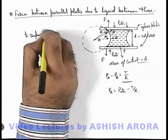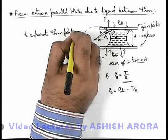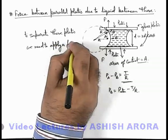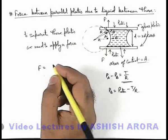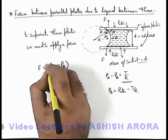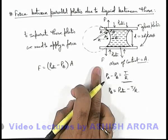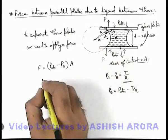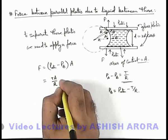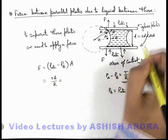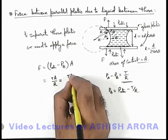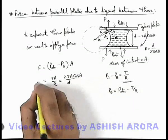And we can say to separate these plates we need to apply a force F which should be equal to, in this situation we must write P atmospheric minus pressure at point B multiplied by the surface area where the liquid is in contact or the zone in which the pressure is less. So in this situation P atmospheric minus pressure B can be written as T by r, so it can be written as T*A by r. And in this situation the radius of curvature can be given as d by 2 cos theta. So here we can write it T*A divided by d by 2 cos theta. This is the expression for the force.